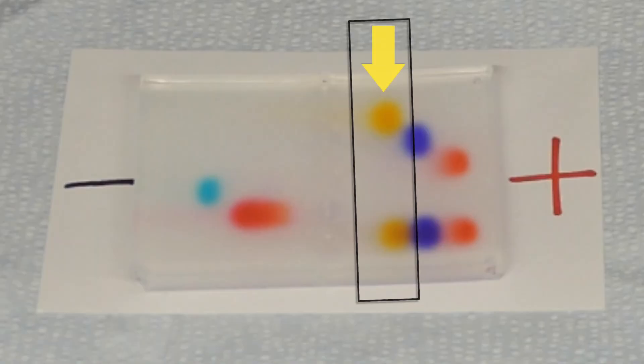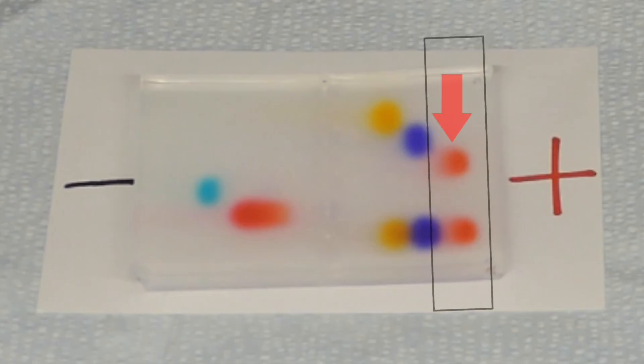Some of the bands do not move as far as others. These would be larger dye molecules. Whereas the bands that move the furthest would be smaller dye molecules. If you have a mixture of dyes, they will separate at the same rate as the single samples. You can see this in the red, purple, and yellow dyes.